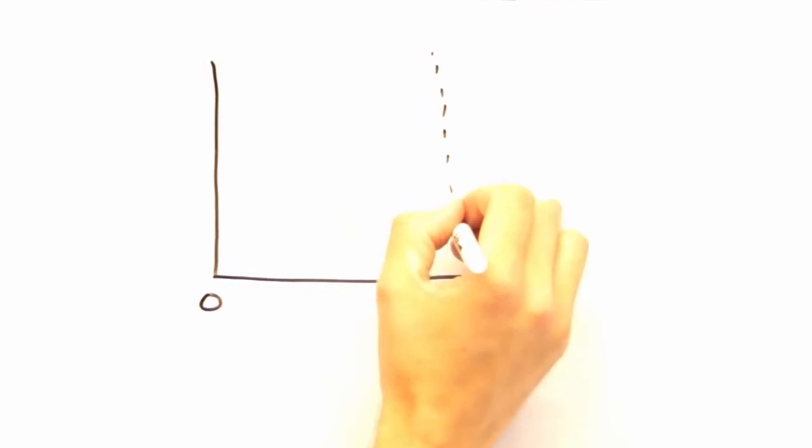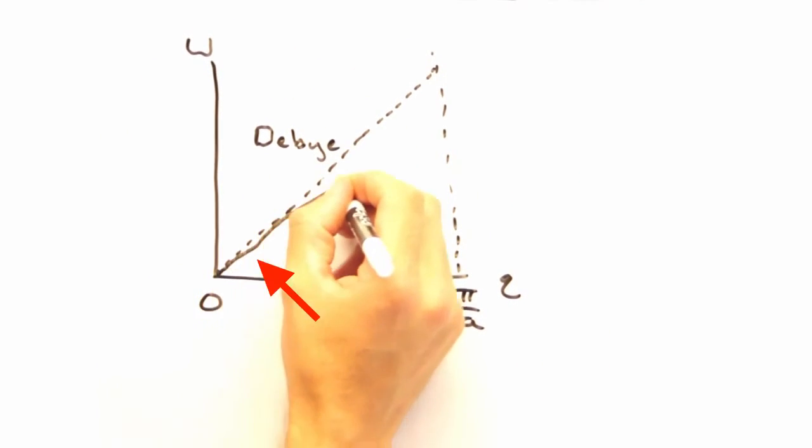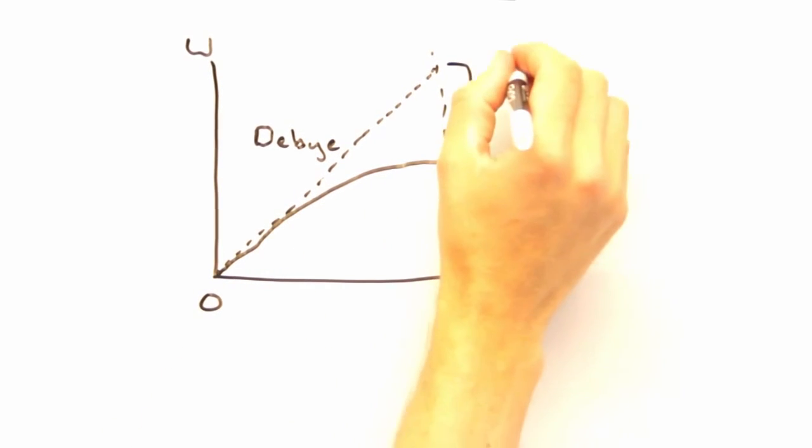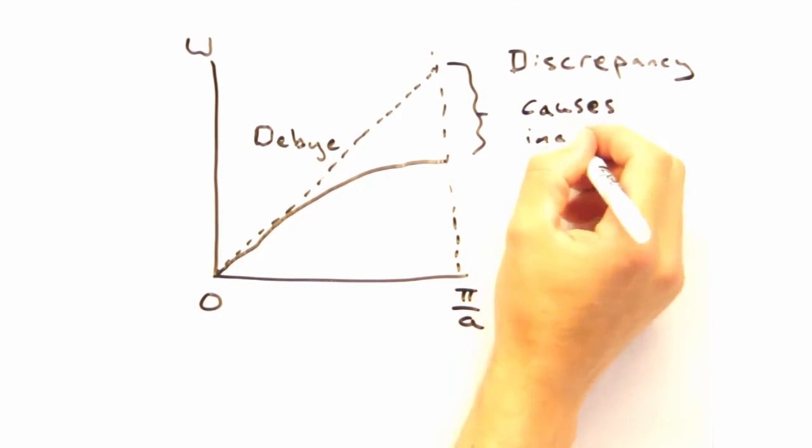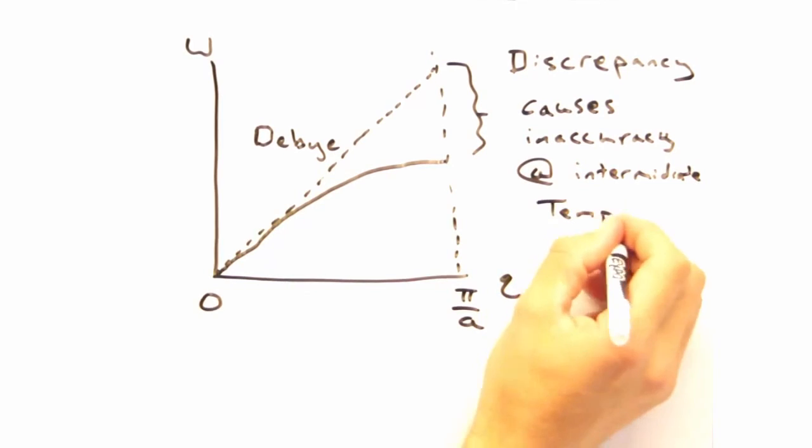The Debye model is still sort of creepy. It gets the heat capacity right at low temperature, because we're near the origin of our dispersion, where we can treat a sine wave as a line. But I'd expect it to be less accurate at intermediate temperatures, where we've started to sample the upper parts of the dispersion.